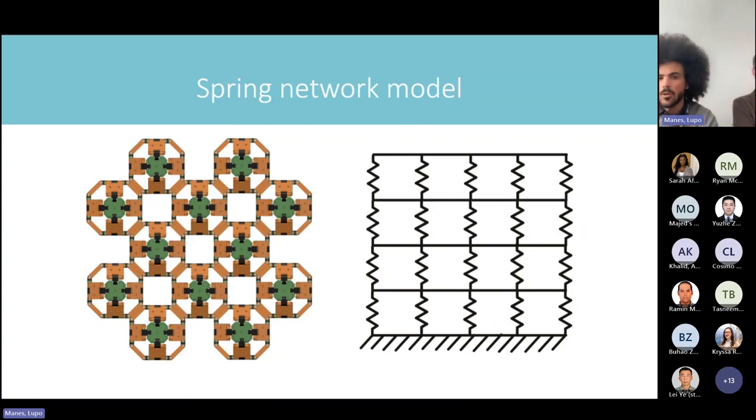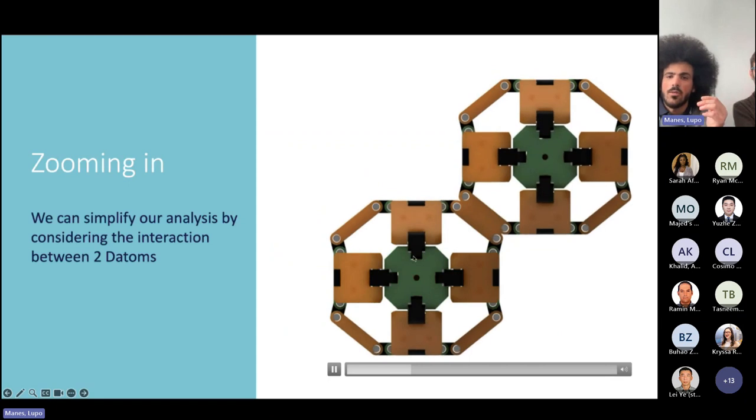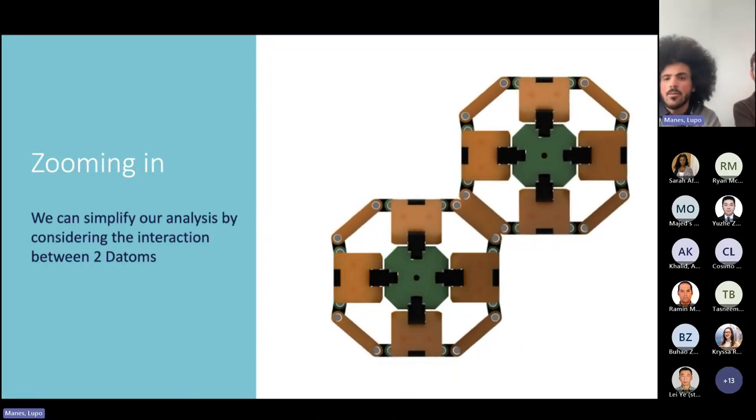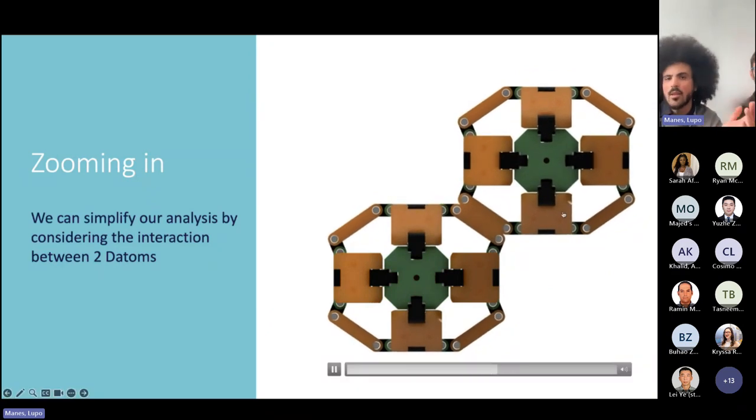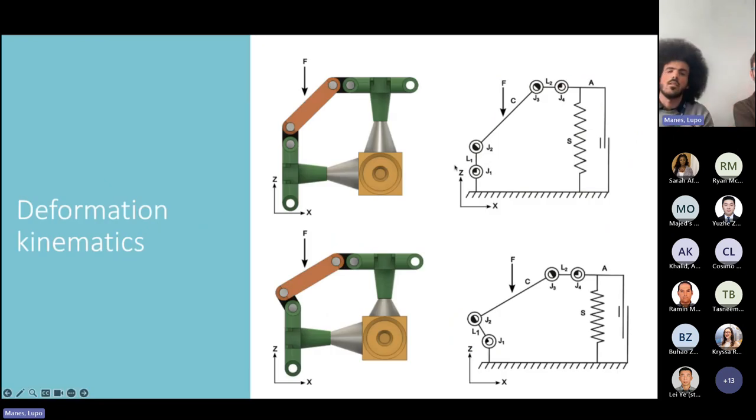The only problem is that the relationship between the displacement of the entire lattice and the displacement of the spring is not one to one. We had to find exactly what the relationship was. We can do that by focusing on the interaction between just two datums and focusing on the displacement of the spring and the entire lattice. We can focus on one corner of the datum, and because the entire structure is symmetrical, we can apply it to everything else.